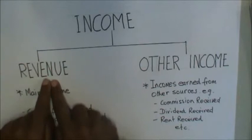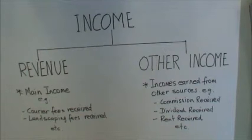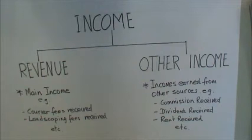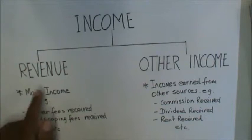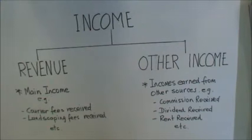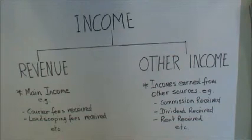Income is reported in two groups: revenue and other income. Under revenue, we are looking at the main source of income, which is the income that the business earns from its operations. For example, if it's a courier business, then the revenue would be the courier fees received. If it's a landscaping business, then the landscaping fees would be the main source of income.